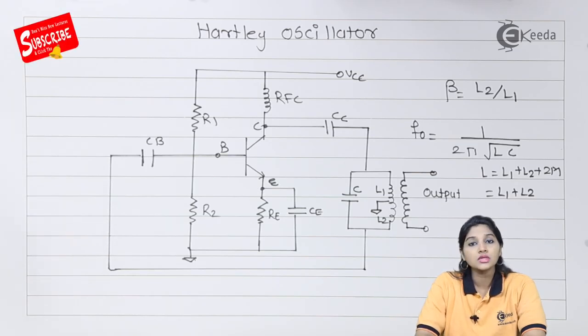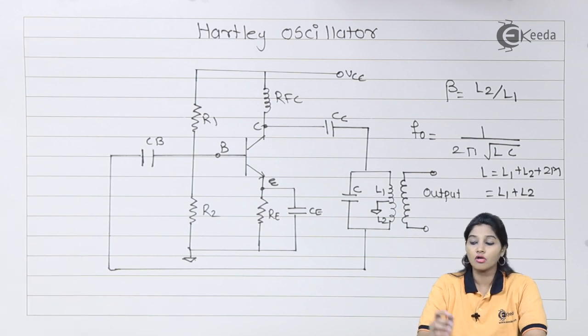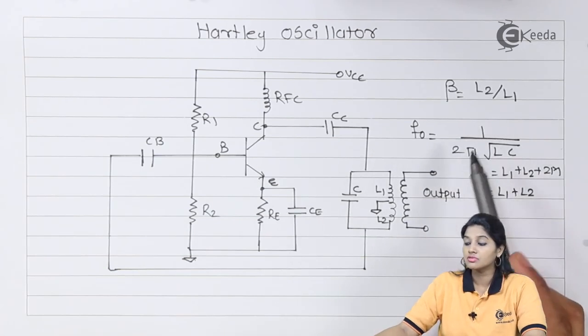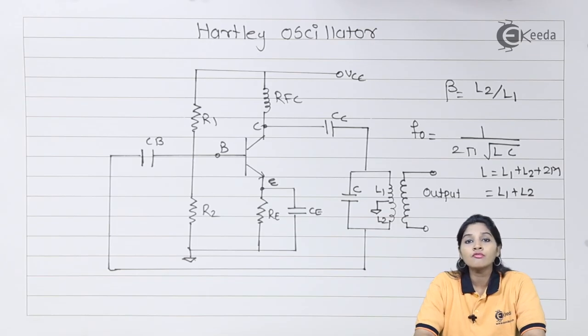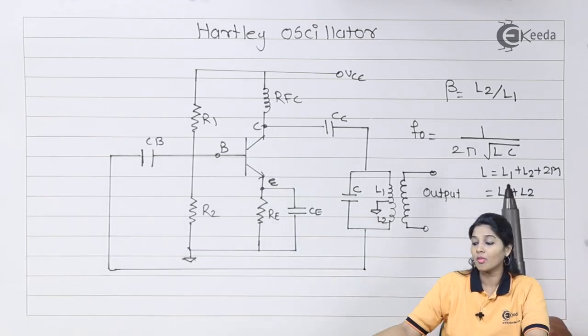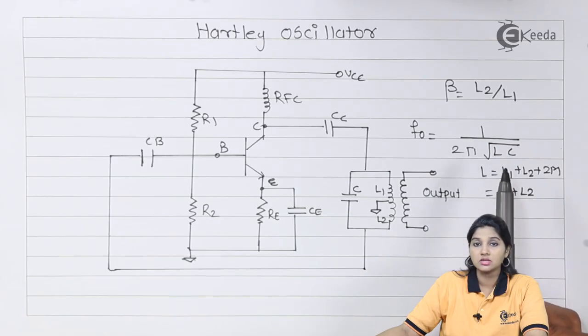Now let's see the frequency of output of oscillation. The frequency of output of oscillation for Hartley oscillator is given by formula F0 equals 1 upon 2 pi square root LC. We know that the value of frequency in case of LC oscillator circuit is inversely proportional to the square root of capacitor value and proportional to the square root of inductor value. That's why the formula becomes 1 upon 2 pi square root of LC.